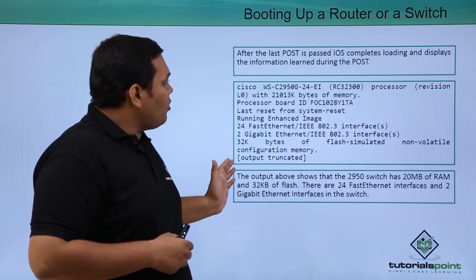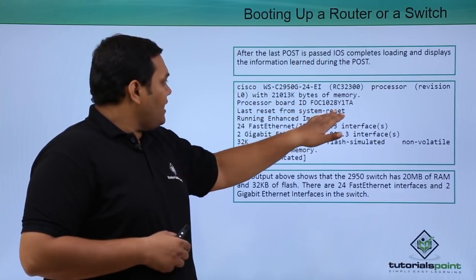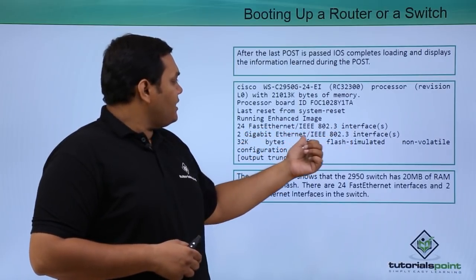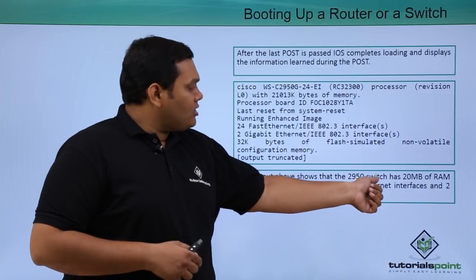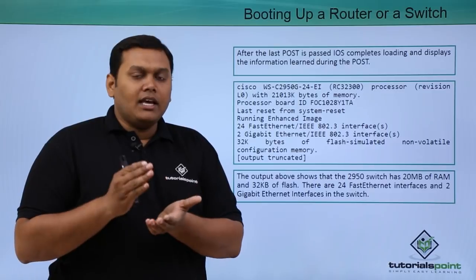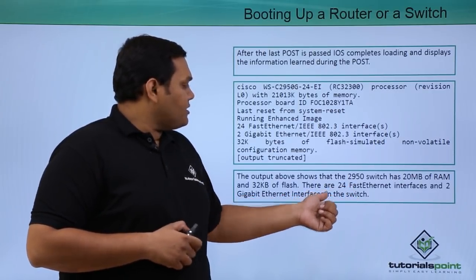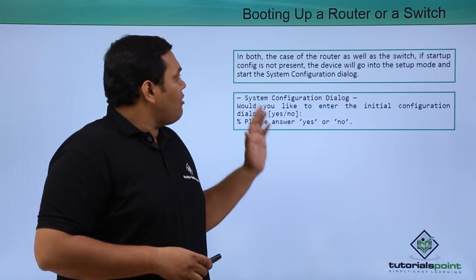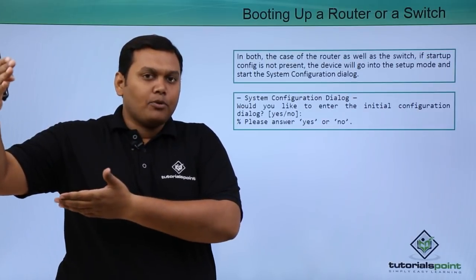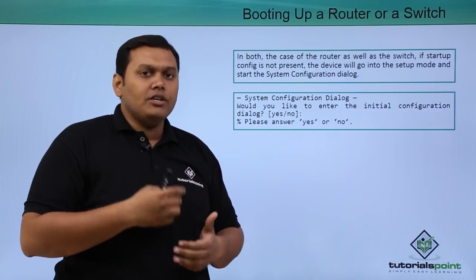After POST, the IOS completely loads and displays information about what it learned. The processor details are shown, and the 2950 switch has 20 MB of RAM, 32 KB of flash, 24 Fast Ethernet interfaces, and 2 Gigabit Ethernet interfaces. In both routers and switches, startup follows the bootstrap process, POST, Cisco IOS loading, and configuration file loading.